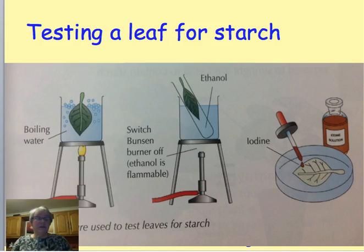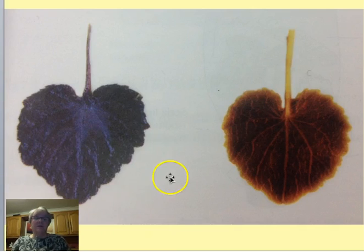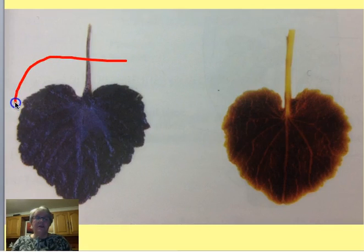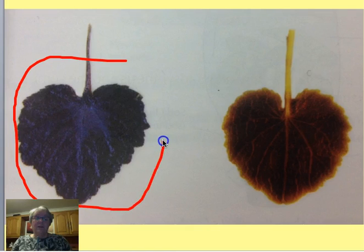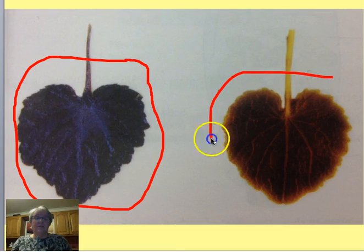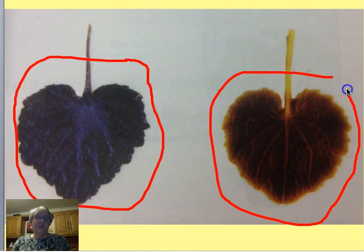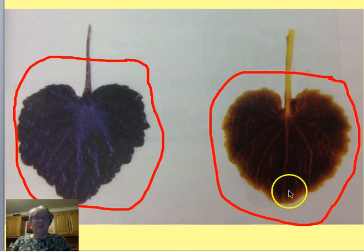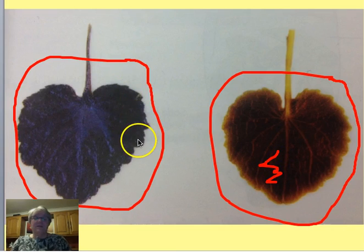Once you've had your leaf in the ethanol and removed all the chlorophyll, you would rinse it in warm water to soften it up, and then add your iodine solution to test it for starch. When you test it with iodine you'd get this sort of result — the leaf on this side has all this blue-black colour to it, showing starch is present. The one over here has been de-starched and probably not placed in light, so there's not as much starch formed — you've got some dark colour in the centre, but nothing like the other side.